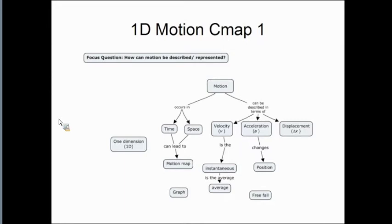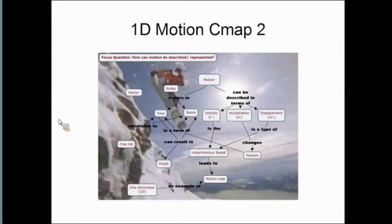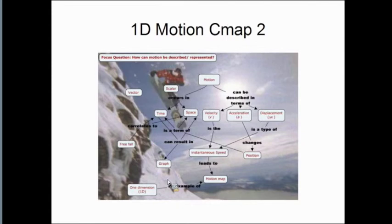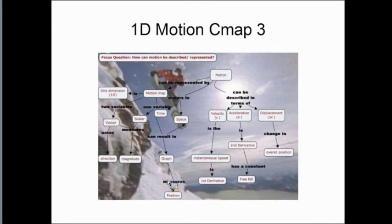His second go-around is represented here, where the student has a little bit more understanding. You can see he's added some concepts like vector and scalar, and he's also started to make it his own. I tell them: make it your own. If we're talking about motion, what do you like about motion? This student happened to particularly like snowboarding. In the third iteration, you can now see that tangle, that mess that existed before, is now starting to be teased out.